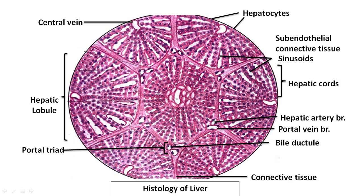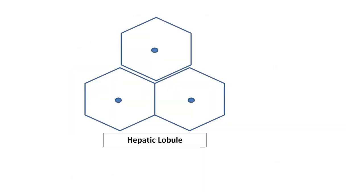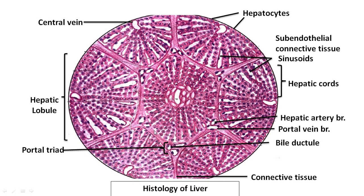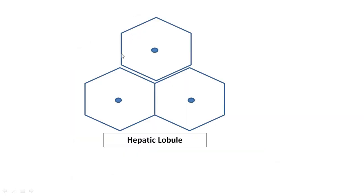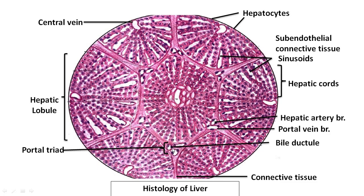Now let us understand the different types of lobules present within the liver. The hexagonal shaped structure is the structural unit with very little connective tissue at the corners. This anatomical or structural unit of the liver is called the hepatic lobule, based on its hexagonal anatomical structure. The center is formed by a central vein, and at each of the six corners there is a portal triad — comprising the hepatic artery branch, portal vein branch, and bile ductule.